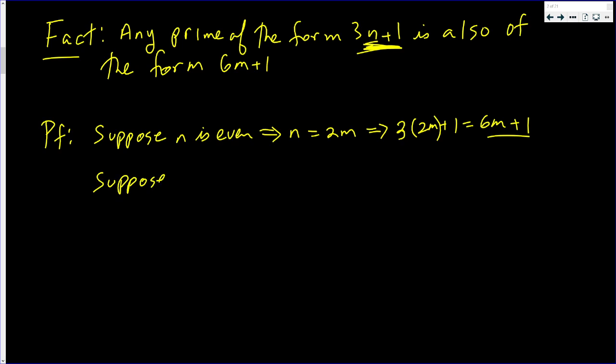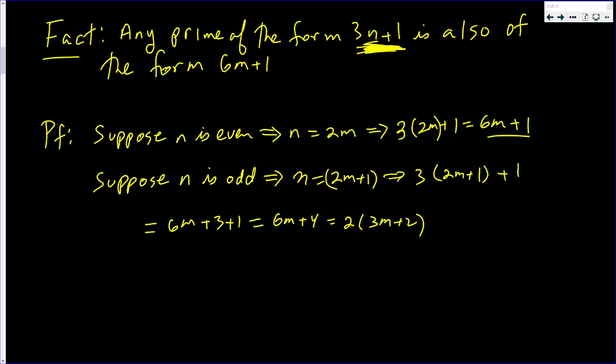Now suppose n is odd. That implies that n can be written as 2m plus 1. So 3 times n plus 1 can be written as 6m plus 3 plus 1, which is 6m plus 4, which is an even number. Now if this number is prime and it's even, that implies the prime number, if there is one, can only equal 2. The prime number can only possibly be 2.